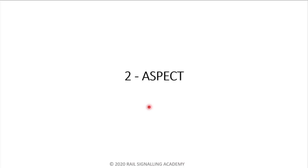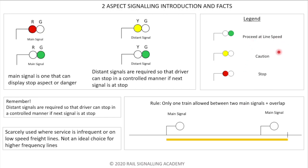Before jumping into how aspects upgrade and downgrade, let's go through a few rules. Green means proceed at line speed. Yellow means caution — it can also mean the next signal is red, so you need to stop at the next signal. Red means stop right here. A main signal can display a stop aspect, so it has a red lamp. Distance signals cannot show stop — they can only show yellow or proceed, warning the driver that the next signal could be a stop signal. Only one train is allowed between two main signals plus an overlap.